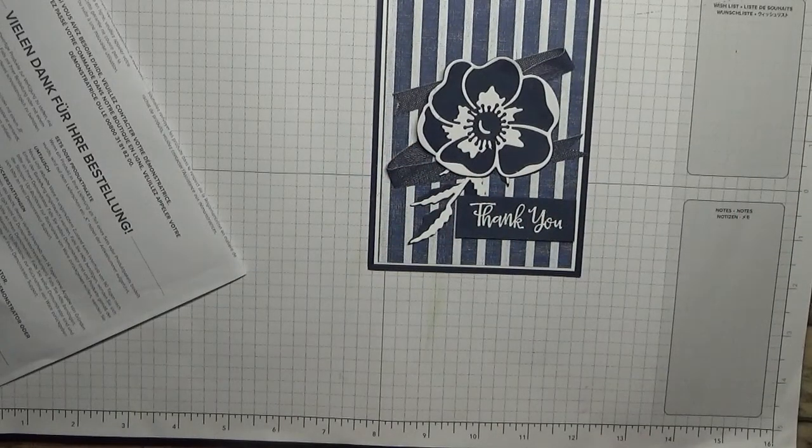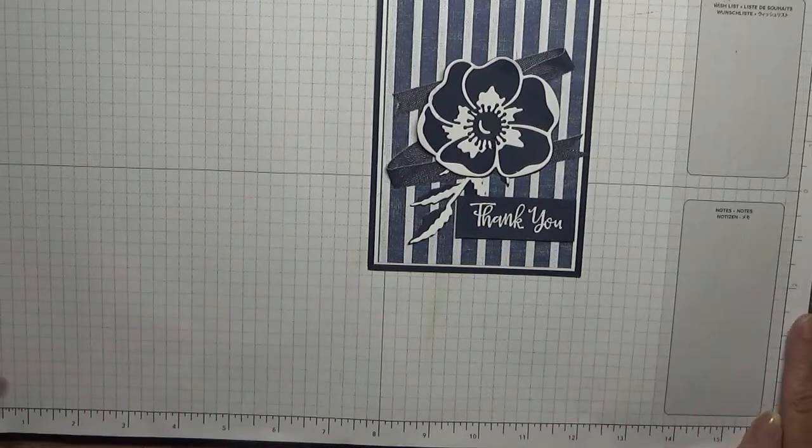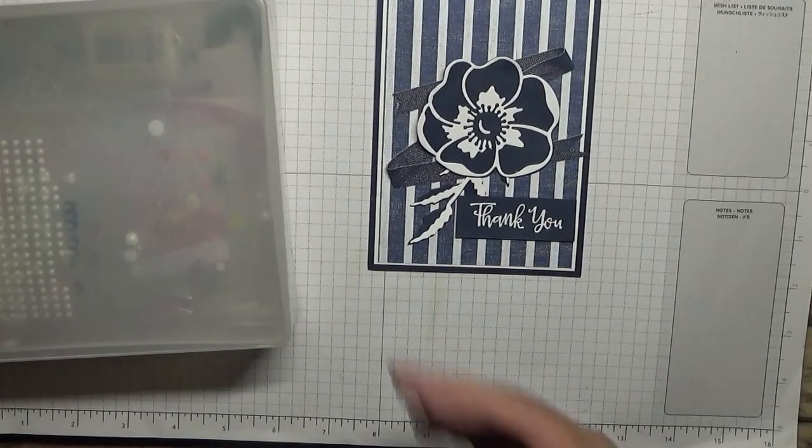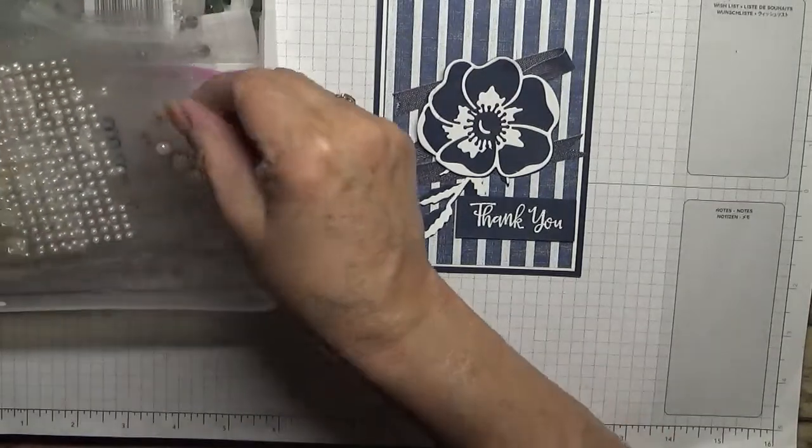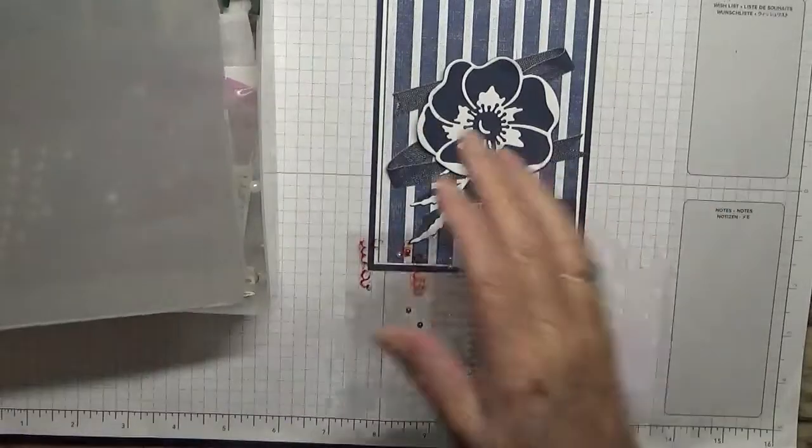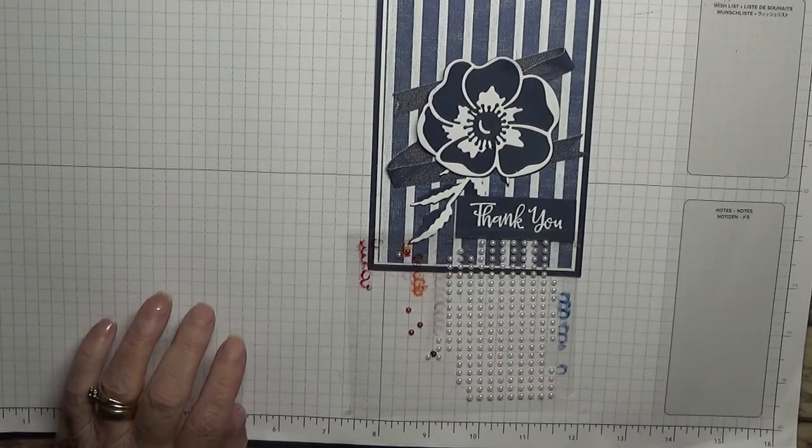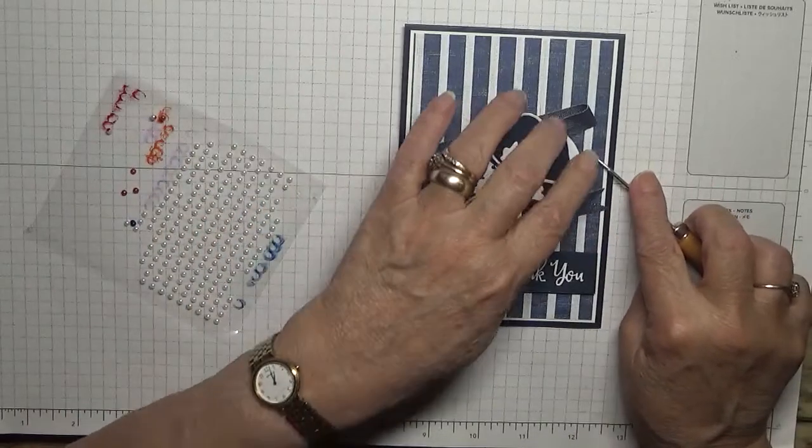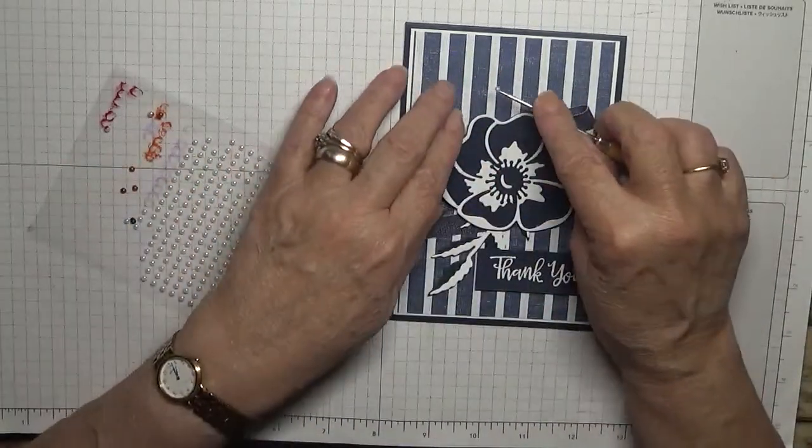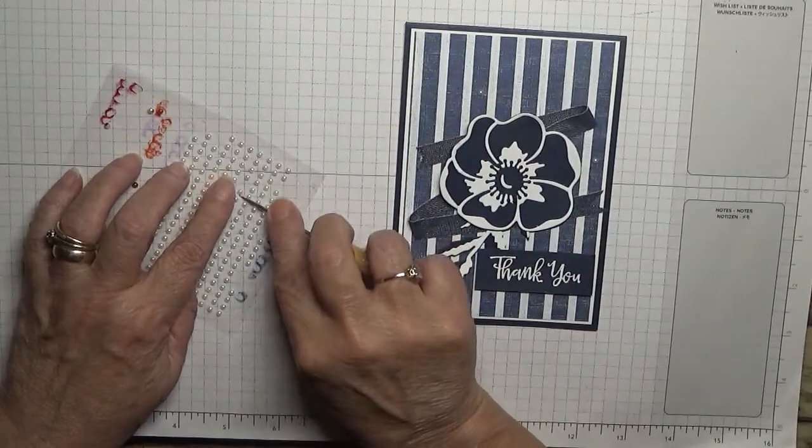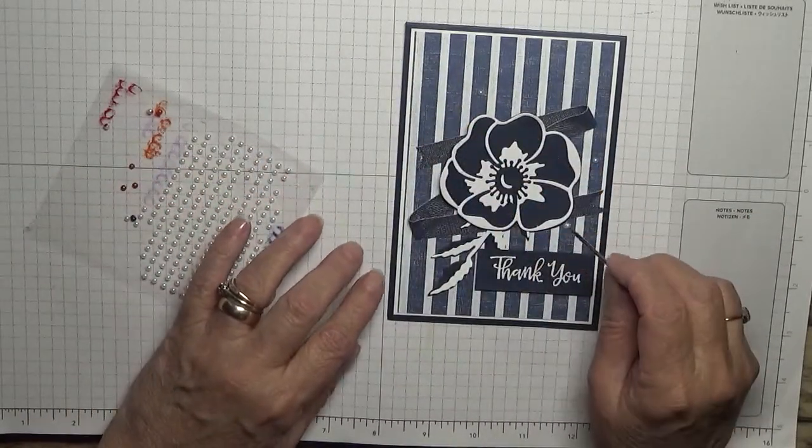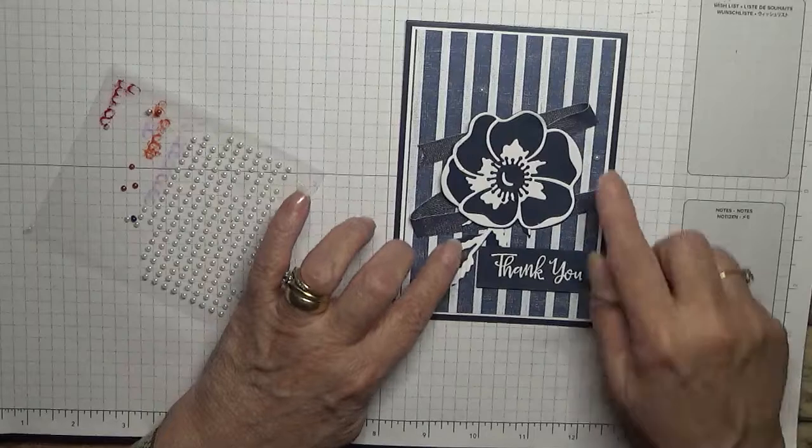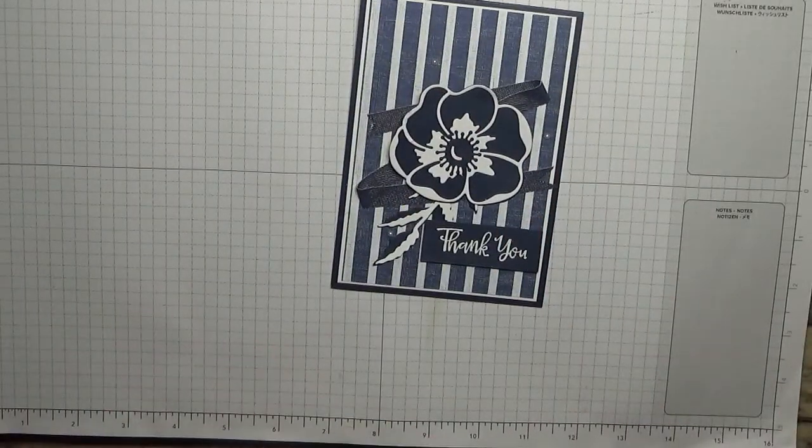Now all we've got left to do is to put some pearls on it which I didn't bring over. Now all we've got left to do is to put some pearls on it. I've got some nice tiny pearls here which I'm going to stick three on. Let's stick that one down there. There we are that's our card finished.